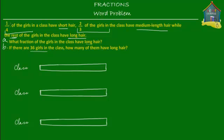Let's mark one fourth. If this model represents all the girls in the class, then one fourth means dividing the class into four equal parts, and one of those parts is one fourth — one out of four. So this one block here represents the fraction one fourth, which is the fraction of girls in the class that have short hair.